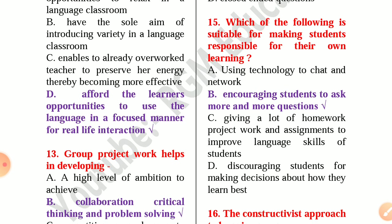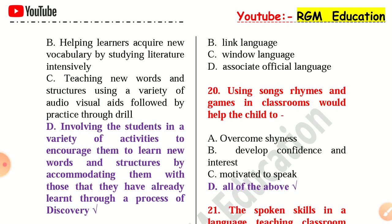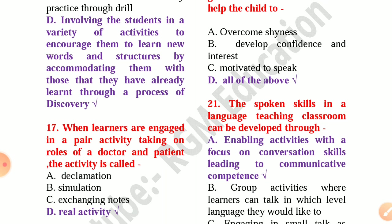The questions we are discussing now are from Central TET question paper 2011. Question number 15: Which of the following is suitable for making students responsible for their own learning? Answer: Encouraging students to ask more and more questions. Number 16: The constructivist approach to learning means involving the students in a variety of activities to encourage them to learn new words and structures by accommodating them with those they have already learned through a process of discovery.